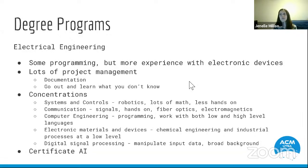The second degree program is electrical engineering, also in the College of Engineering. It's kind of the opposite of computer engineering in the sense that you'll get some computer programming, but more experience with electronic devices. Since it's in the College of Engineering, you'll get lots of skills in documentation and going out to learn skills on your own to complete projects, because the College of Engineering is very project oriented. The electrical engineering degree also offers a lot of different concentrations to choose from.